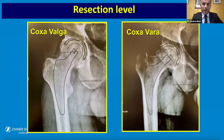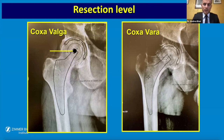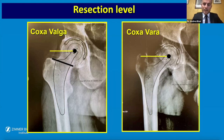Regarding resection level, we can see coxa valga and coxa vara. In coxa valga, the center of rotation is higher than normal; in coxa vara, it is lower. In coxa valga, the resection level is more horizontal and the distance to the lesser trochanter is greater. In coxa vara, the resection level is more vertical and the distance to the lesser trochanter is smaller.